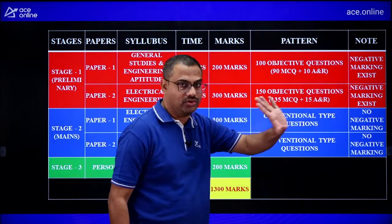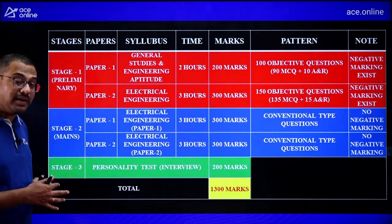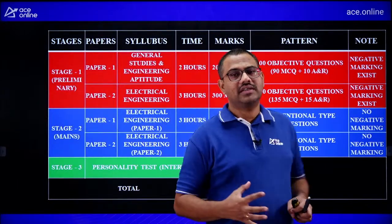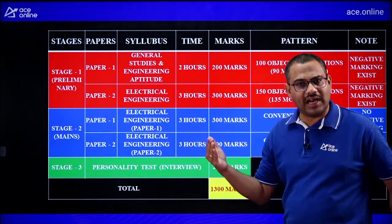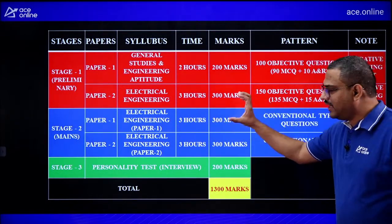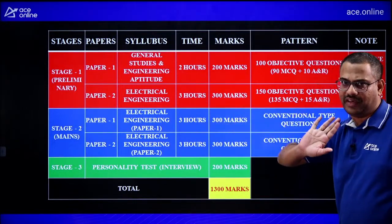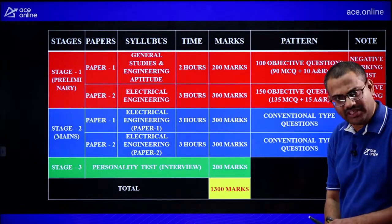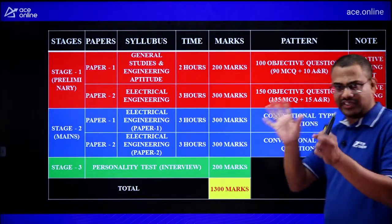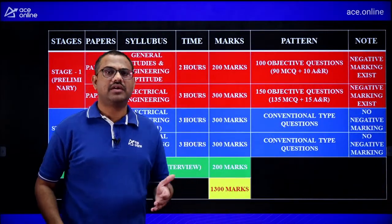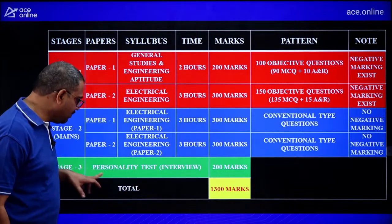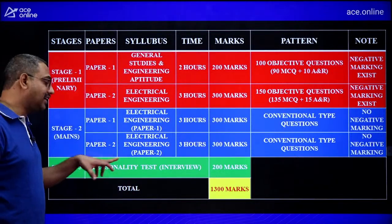After clearing ESE Prelims, results come by mid-to-late March. Then prepare for Mains — Stage 2 — held in the last week of June or first week of July. Mains has Paper 1 and Paper 2, both conventional type, 3 hours and 300 marks each, requiring detailed derivations and problems using calculators. No negative marking in Mains. Stage 3 is the Personality Interview Test.